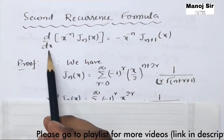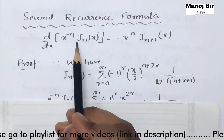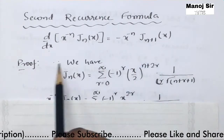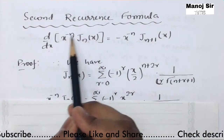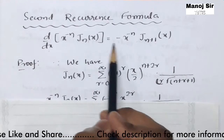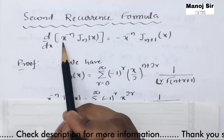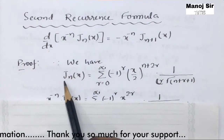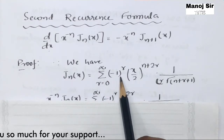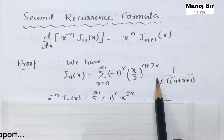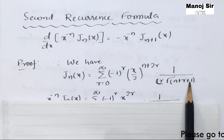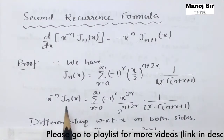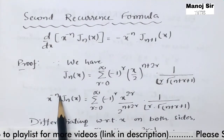Now the second recurrence formula: d/dx of [x^{-n} times J_n(x)] equals minus x^{-n} times J_{n+1}(x). Our approach is the same: find J_n(x), multiply by x^{-n}, then differentiate. J_n(x) equals summation r=0 to infinity of (-1)^r times (x/2)^{n+2r} times 1 over (r! times Gamma(n+r+1)).